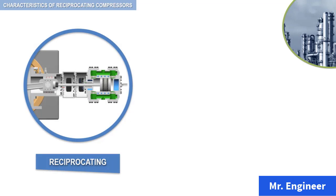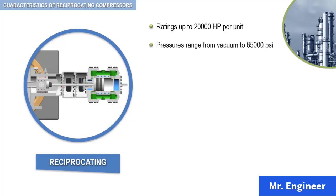Reciprocating compressors are the most widely used of all compression equipment and also provide the widest range of sizes and types. Ratings vary from fractions to more than 20,000 horsepower per unit. Pressures range from low vacuum at intake to 65,000 psi or higher.